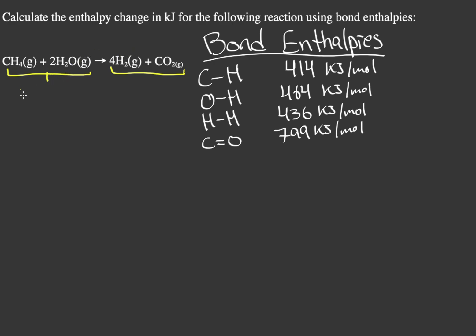In our reactants, we have to break these apart so we can form our products. This is going to be an endothermic process, so the value for our bond enthalpy is going to be positive. And we're forming these, so the value for our enthalpy is going to be negative.